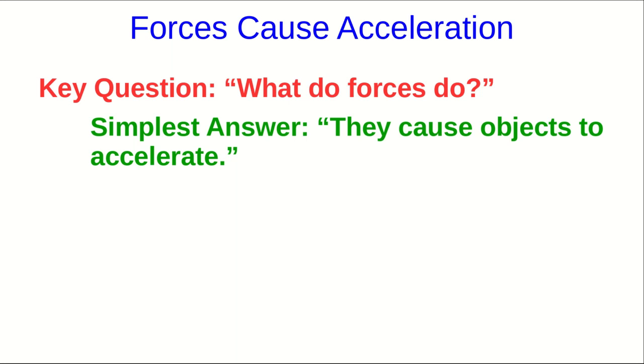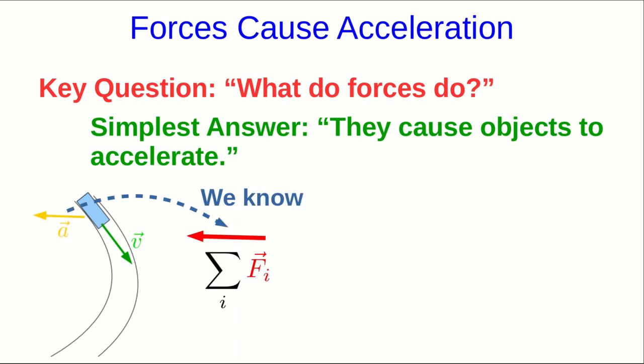But even so, there are subtleties even to this simple part of the answer. Let's think about a car going around a corner, and let's say we've made detailed measurements on its velocity, and we know which way the acceleration is at this instant from analyzing the motion. Then we can conclude that the vector sum of forces points in the same direction as the acceleration, because the acceleration is always in the direction of the vector sum of forces.